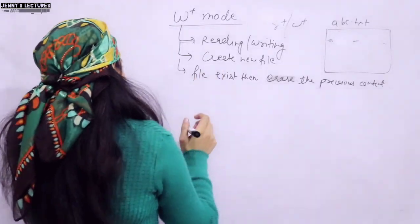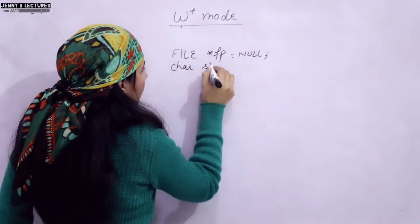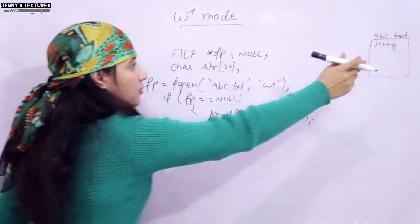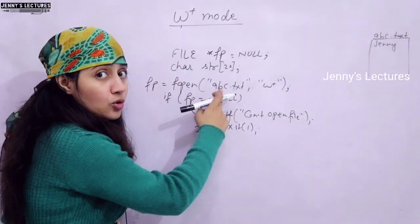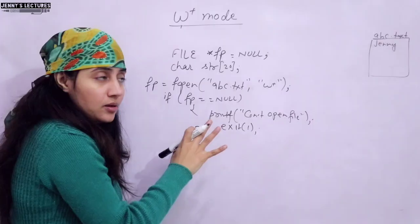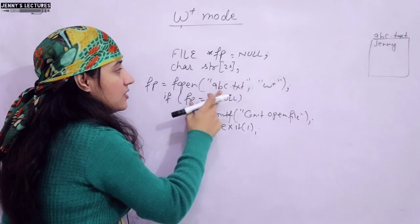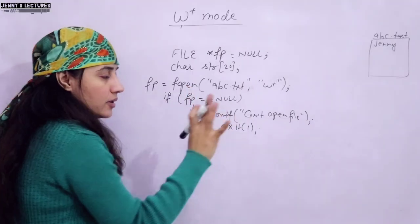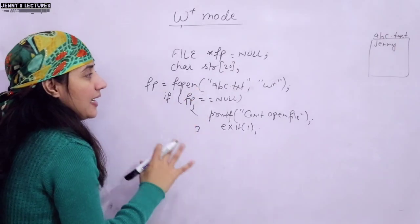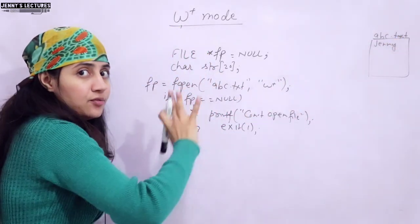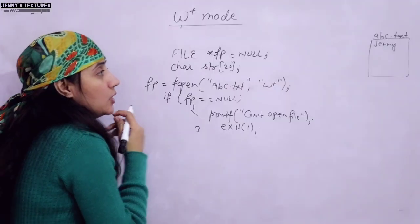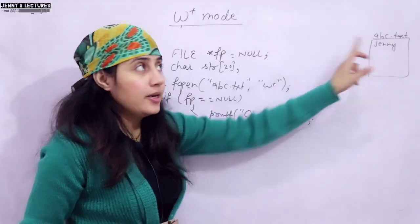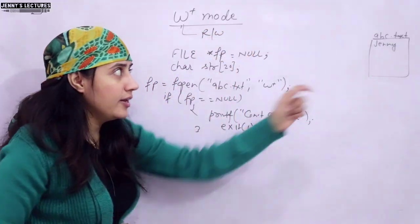Now let's see a program of W plus mode. We have a file abc.txt — suppose in this file I have 'Jenny'. I'm going to open this file in W plus mode. If FP is null, it means Fopen was not able to open the file due to some error, so it prints 'cannot open file'. If Fopen successfully opens the file, and the file doesn't exist, it will create a new file. Now my question is: can you read this 'Jenny' that was already in the file?